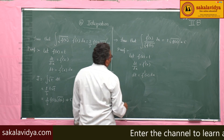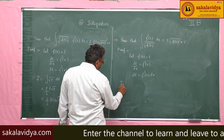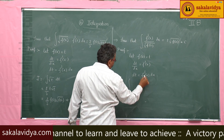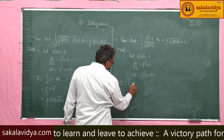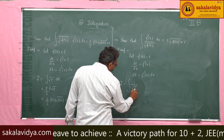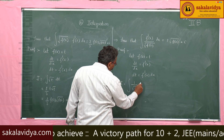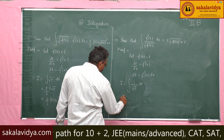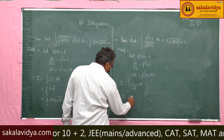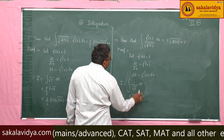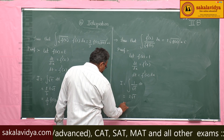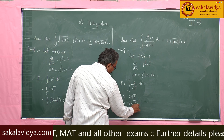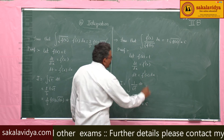Now this can be written as the integral of (1/√t) dt. Since the integral of 1/√x is 2√x, we get 2√t, and since t is nothing but f(x), the result is 2√f(x) plus the constant of integration.